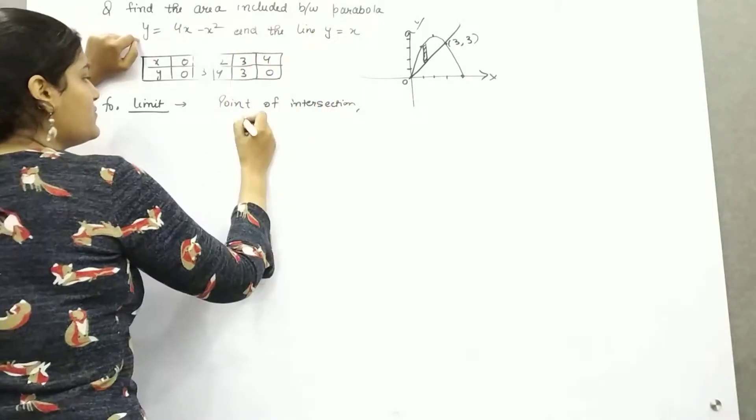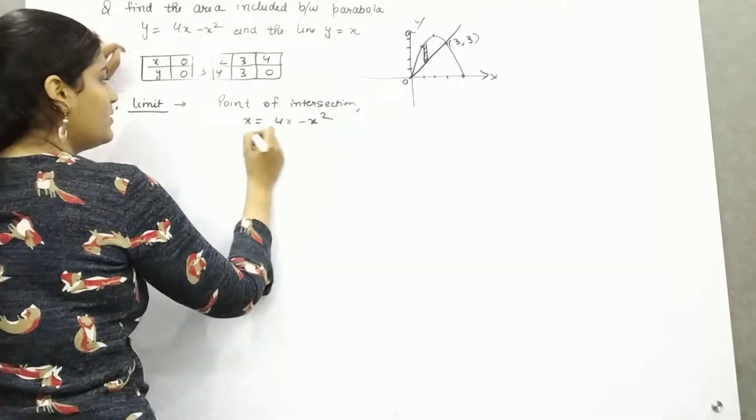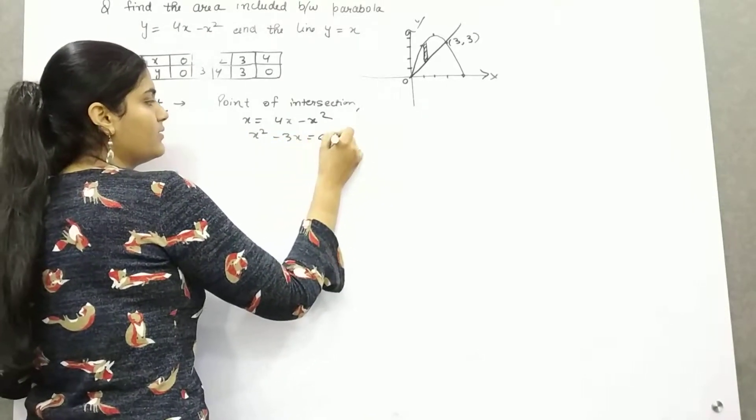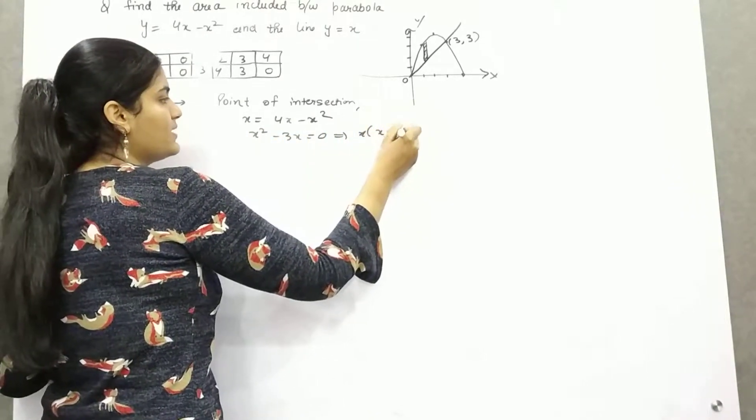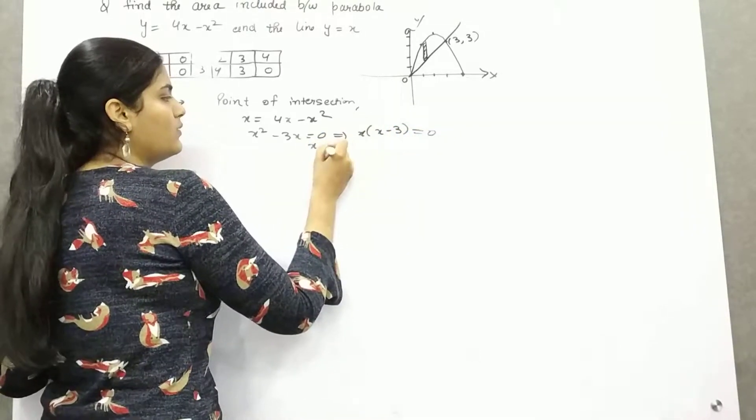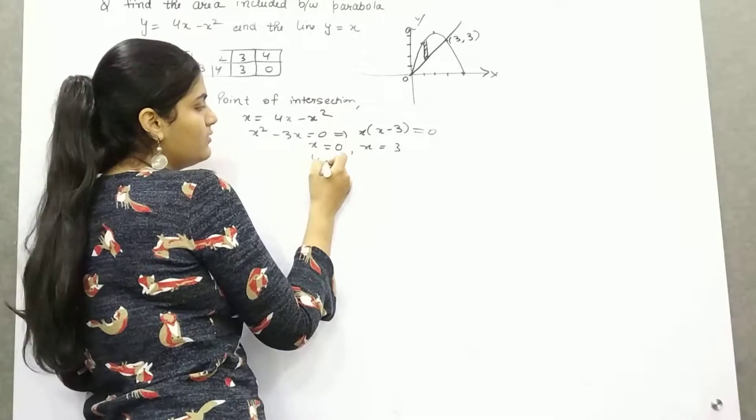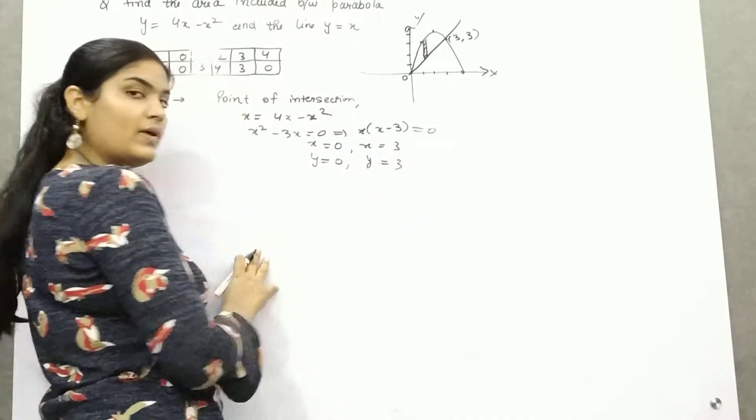If you solve these two, y equals x. So from first and second, these two will be equal. So x will be x squared minus 3x. Take x common, x(x minus 3). So x is 0, x is 3. If x is 0, y is 0. If x is 3, y is 3.